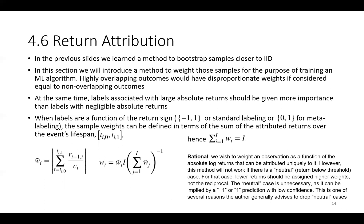At the same time, labels associated with large absolute returns should be given more importance than labels with negligible absolute returns. When labels are a function of the return's sign (-1 or 1 or standard labeling of 0 to 1 for meta labeling), the sample weights can be defined in terms of the sum of the attributed returns over the event's lifespan. We see below the formula of the weights and hence the summation of the weights is equal to I.